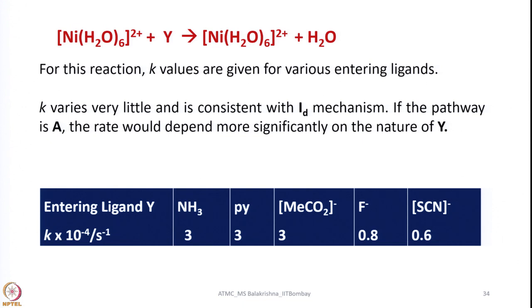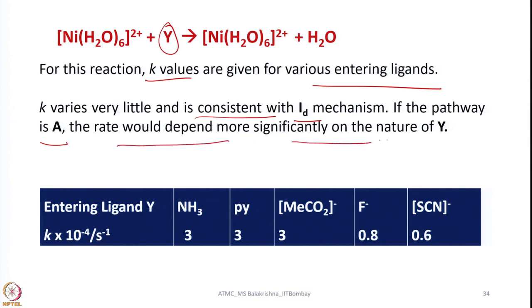Let us look at a typical reaction — hexa aqua nickel reacting with Y to give a product. For this reaction, K values are given for various entering ligands, and the K values vary very little, which is consistent with an Id mechanism. If the pathway were associative, the rate would depend more significantly on the nature of Y. By just looking at the K values, one can get an idea about what mechanism the reaction follows. If independent of concentration of Y with very little variation in K, it indicates dissociative or Id mechanism.